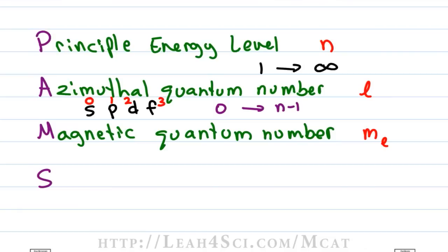So L is P, M sub L would be Px, Py and Pz. Mathematically, we can calculate M sub L from negative L through positive L and don't forget to have the 0 in between.